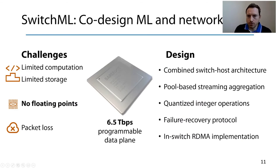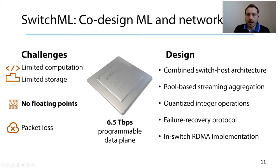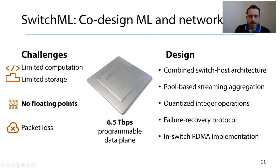But there are some challenges to this approach. Since programmable ASICs need to process traffic at very high speed, they have only a few nanoseconds to process a single packet, so they cannot perform a large amount of computation and can use only on-chip memory. Moreover, these chips often do not provide floating-point units. We also need to consider that packet losses can happen. To deal with these challenges, SwitchML is designed with: a combined switch-host architecture, a pool-based streaming aggregation, a block-based quantization approach, a failure recovery protocol, and an in-switch RDMA implementation to reach line-rate processing even at 100 Gb/s.